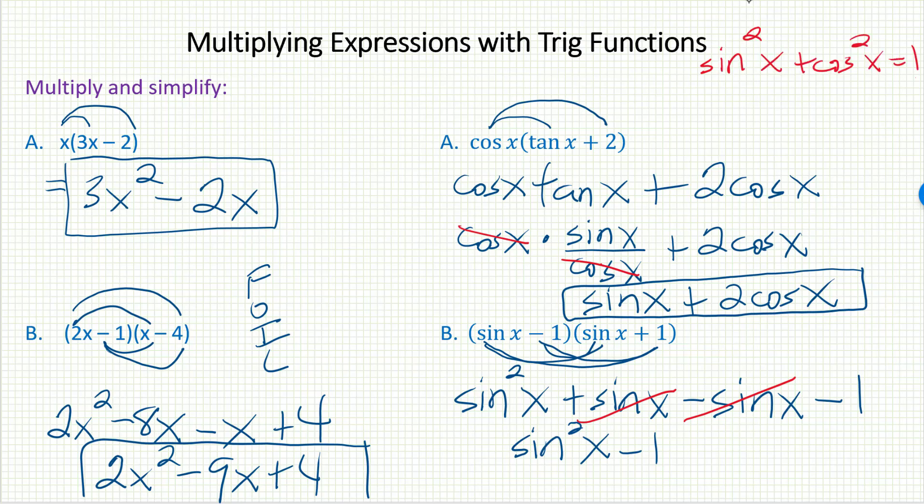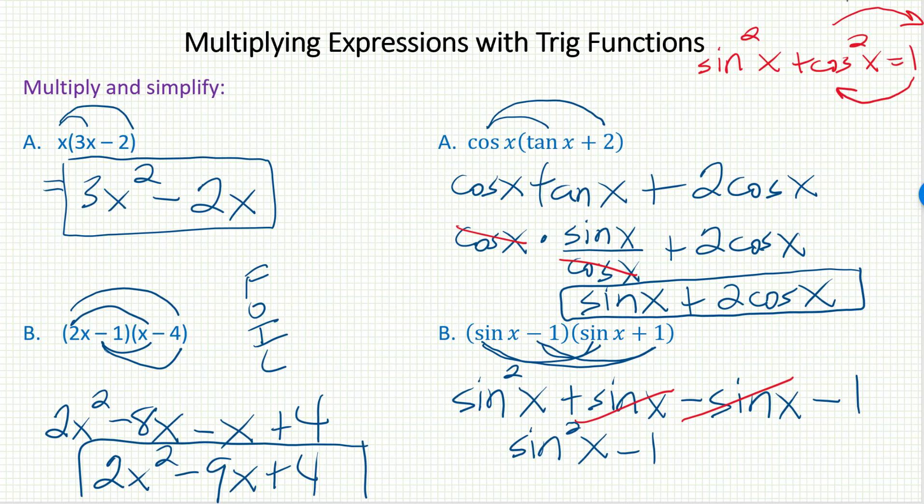It looks like I can because if I just subtracted the 1 to this side and then moved the cosine squared over to the other side, I'll have sine squared x minus 1 on the left and then negative cosine squared x on the right.